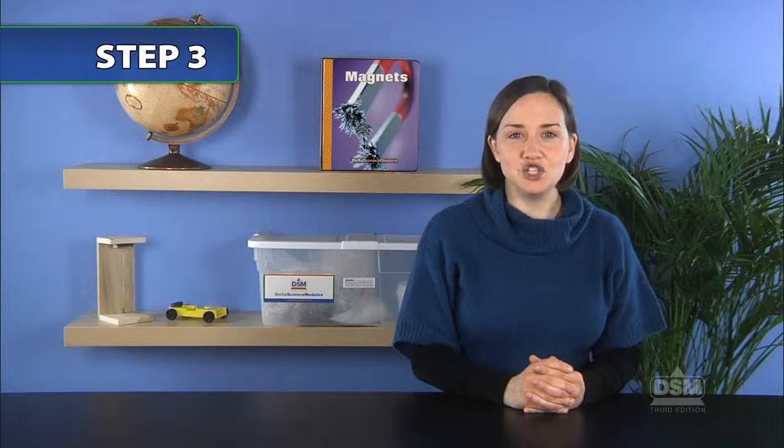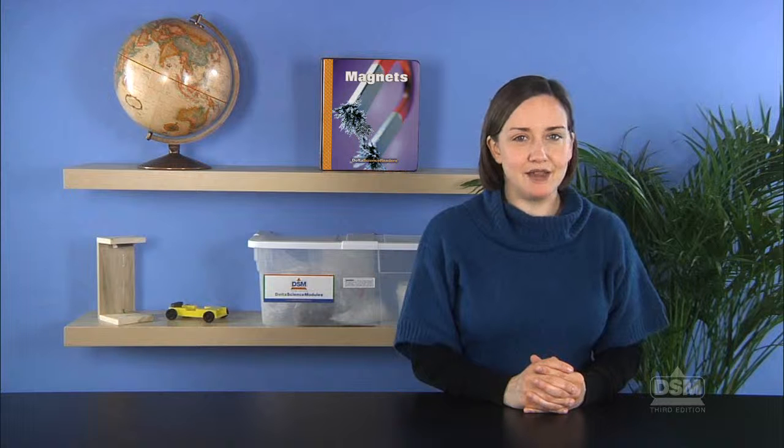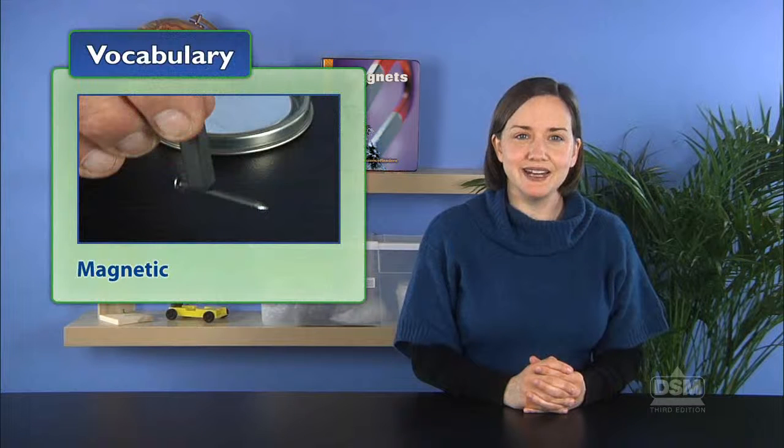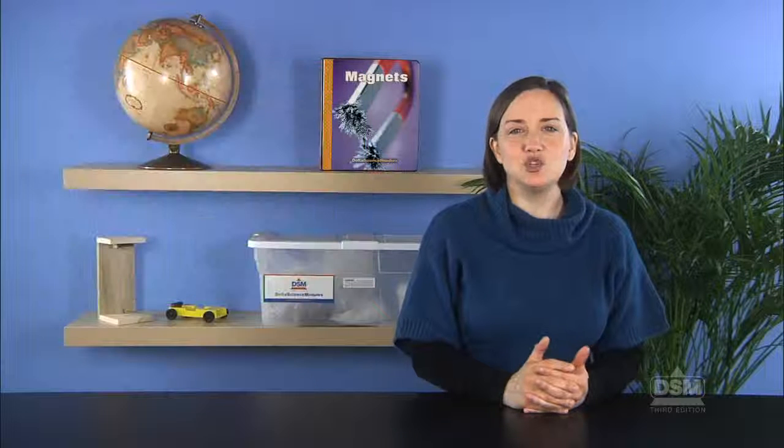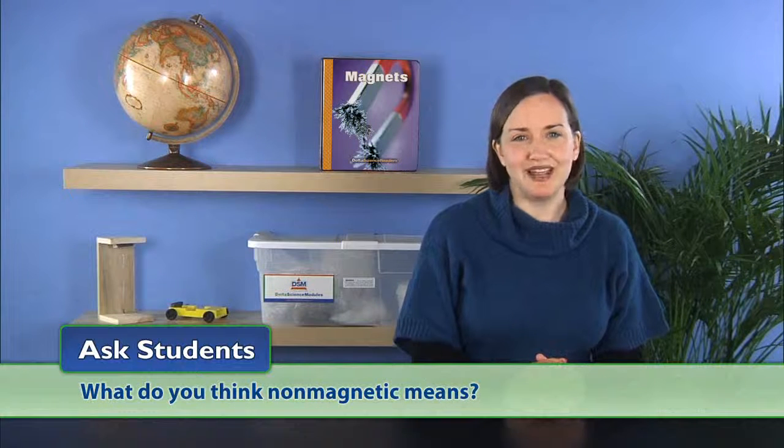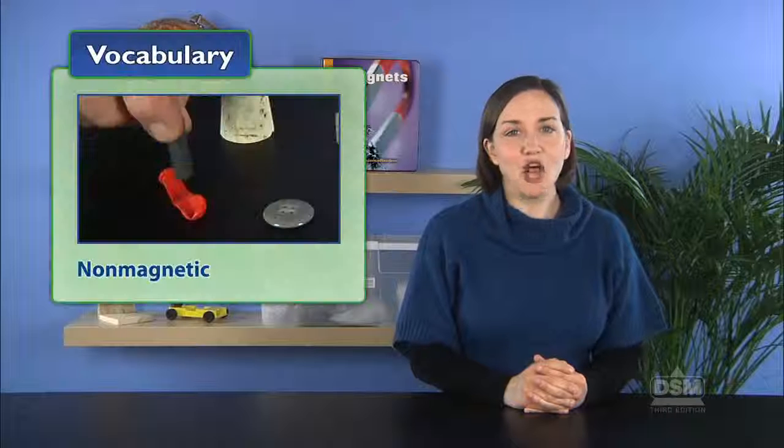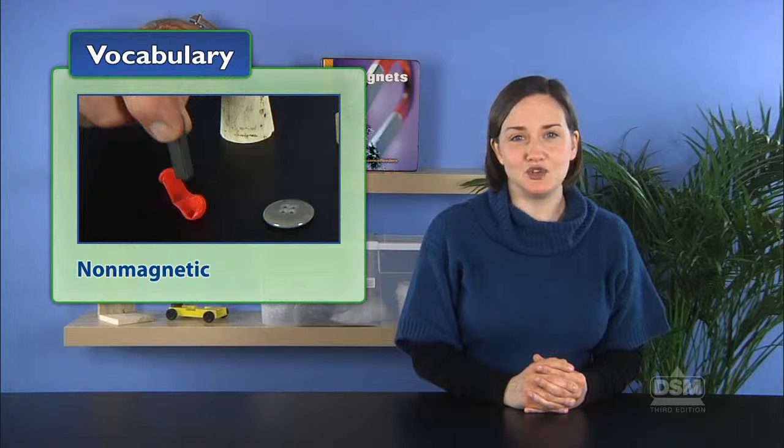After the students are finished testing the objects, explain that, in this instance, the word magnetic is used to describe something that is attracted to a magnet. Ask students, what do you think non-magnetic means? Explain that non-magnetic describes something that is not attracted to a magnet.